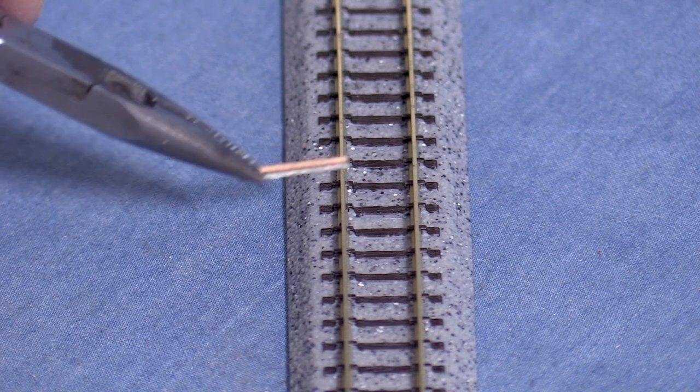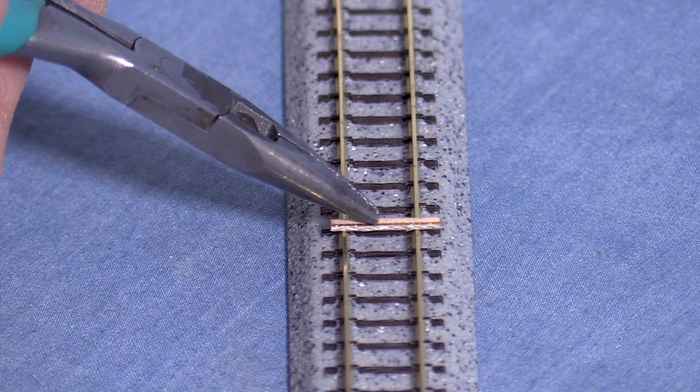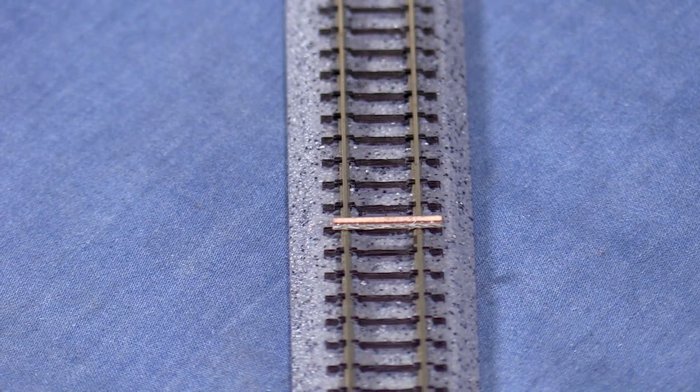One way to test each tie is by putting the gap side in contact with the live DCC track. If the tie doesn't cause a short, then the gap is good. If it does short, then it needs to be cut some more.